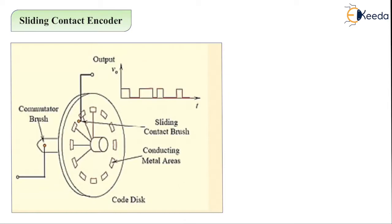What do you mean by sliding contact encoder, or how is the signal generated in the sliding contact encoder? As you can see in the diagram representing the sliding contact encoder, these are the sliding contact brushes, these are the conducting metal areas, and these are the commutator brushes. When the shaft is rotating, there is a sliding contact between the brush and the commutator brush, and the conducting areas generate the signal.